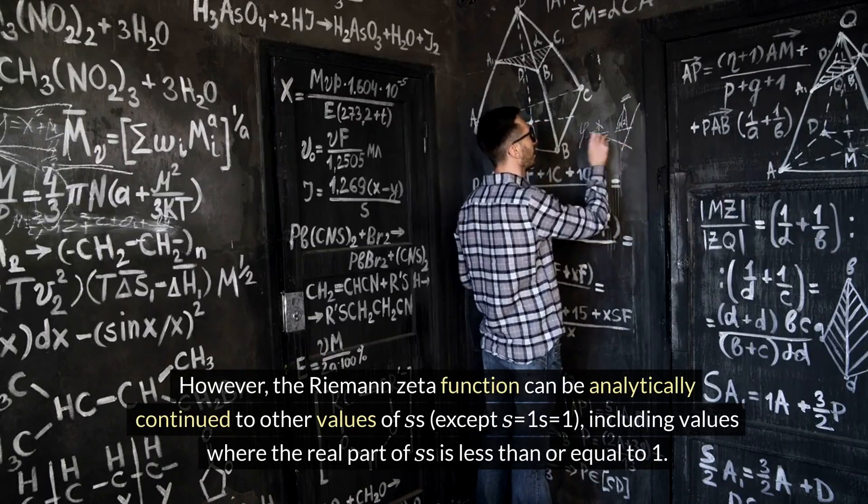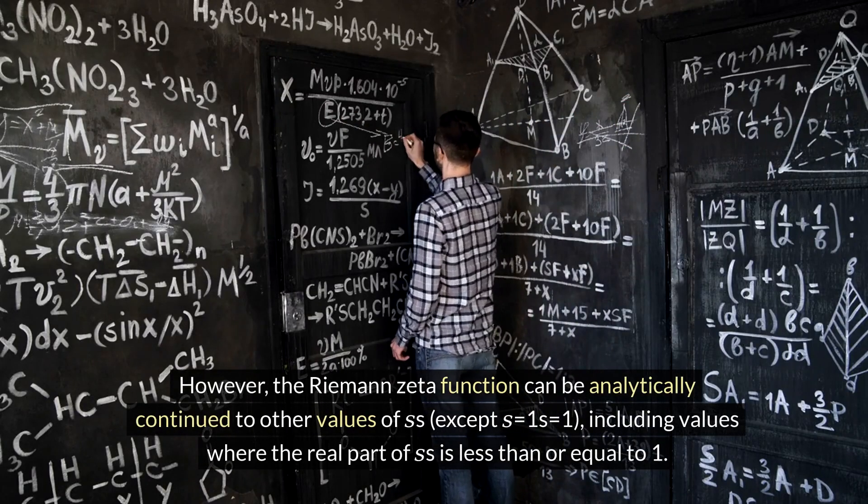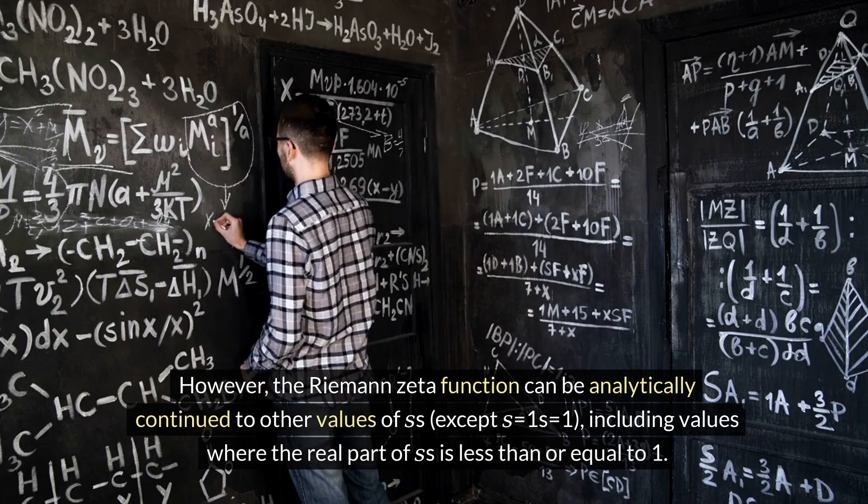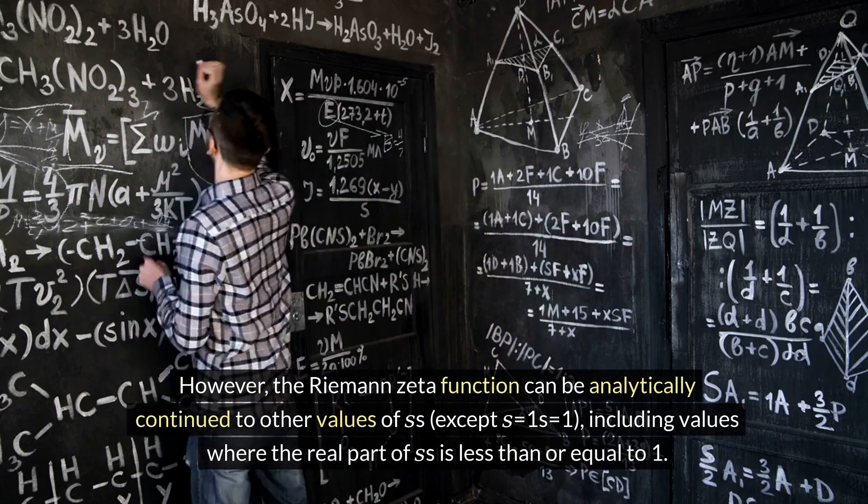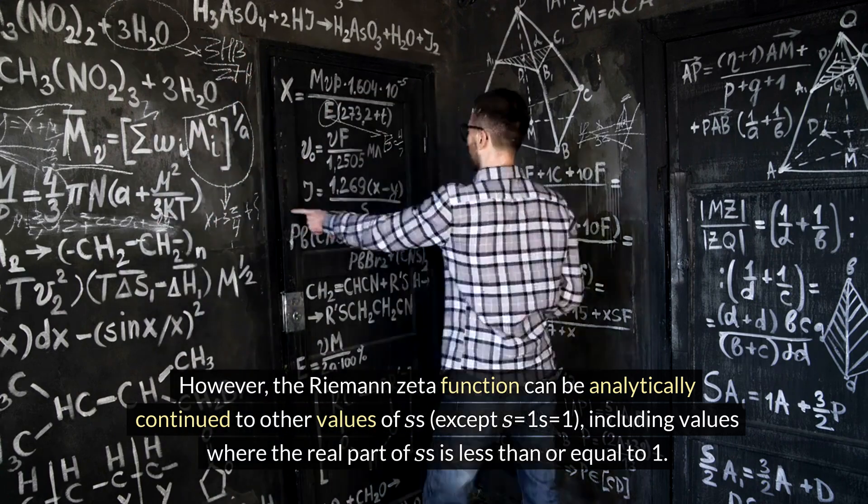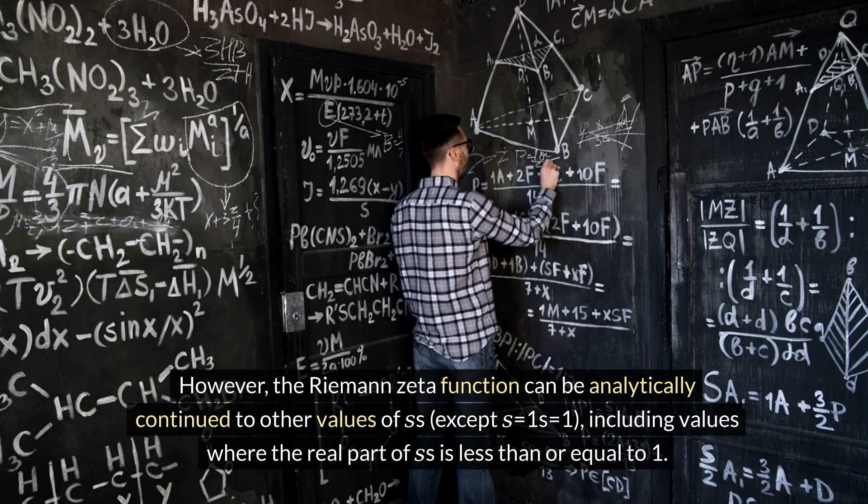However, the Riemann zeta function can be analytically continued to other values of s, except s = 1, including values where the real part of s is less than or equal to one.